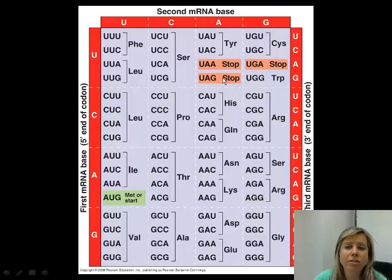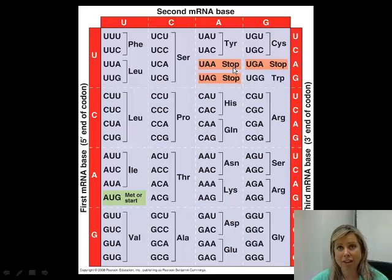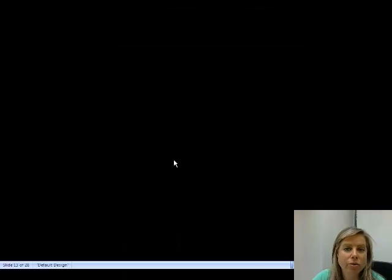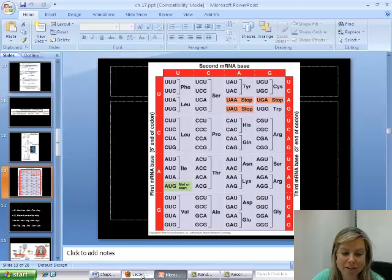If you look at these ones shaded in that salmon color, those are going to be the three stop codons. The three stop codons are UAA, UAG, and UGA. Those are going to be found at the end of the gene that you're translating, and they're going to be really important when we get to the end of the process of translation.